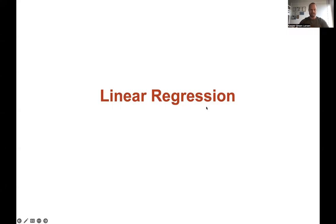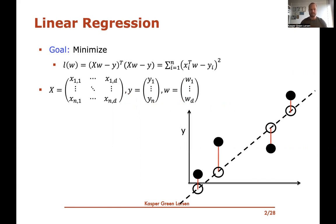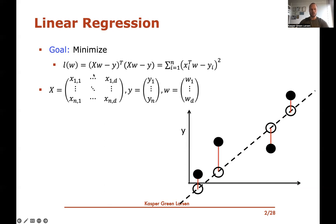Welcome to this next video on linear regression. To recap the previous video: we motivated linear regression and ended up with the formulation that we want to minimize the loss of a given hypothesis w, where w specifies a hyperplane. The loss is the least squared loss — you sum over all training examples, compute the inner product between w and the feature vector xi, subtract the true label yi, and square it. Writing this with the data matrix X (with feature vectors as rows), the label vector y, and parameter vector w, the loss can be written as the inner product of Xw minus y with itself.